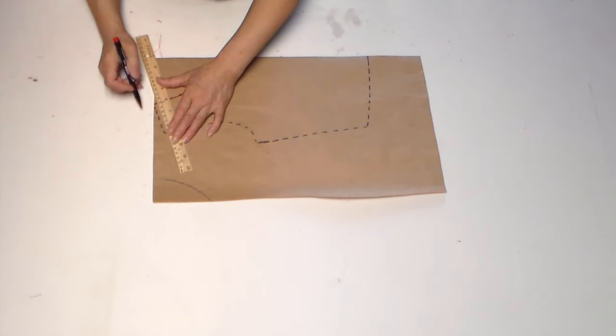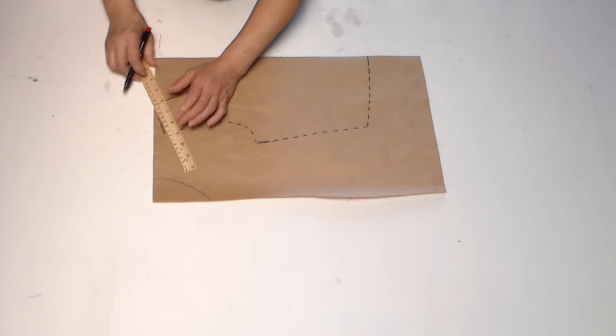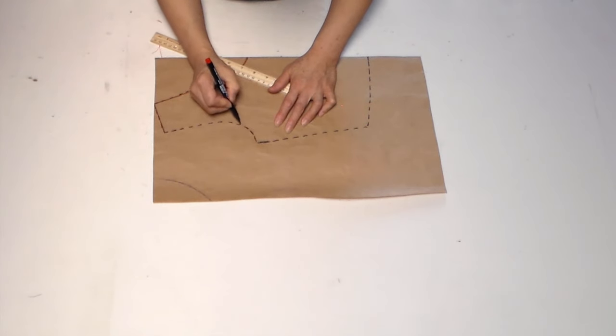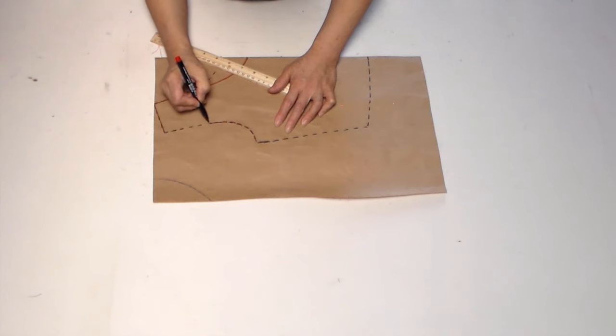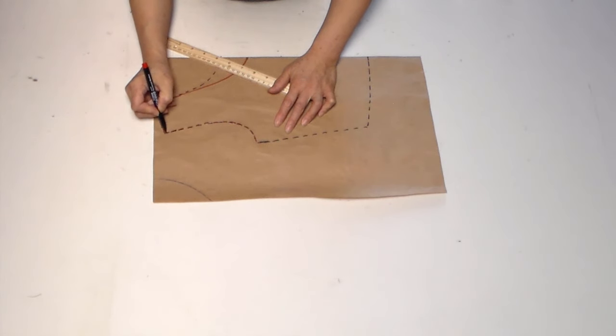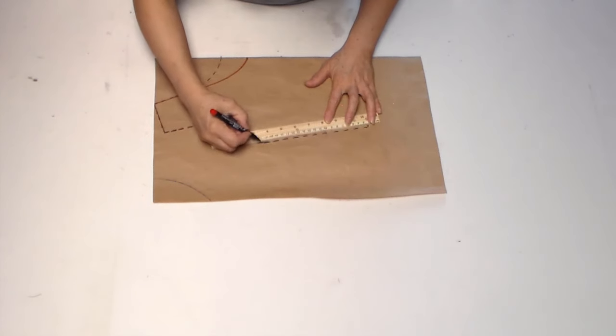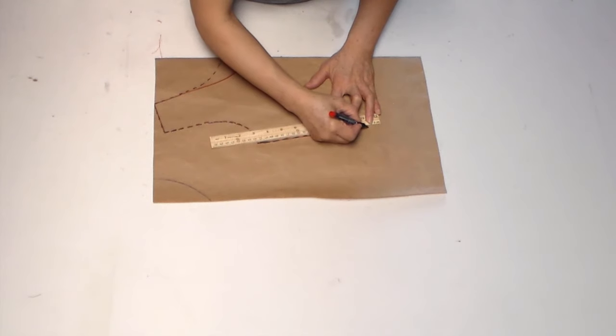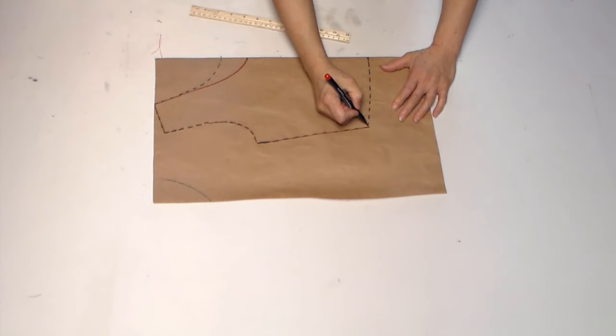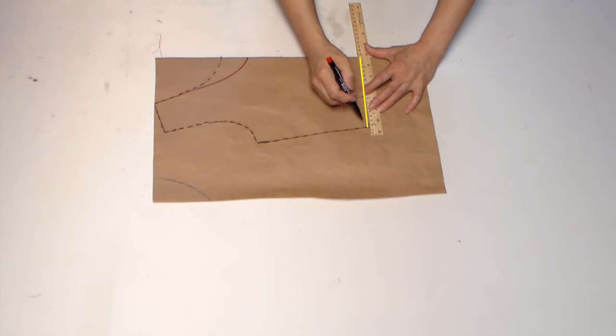So now, we make the cutting line clear. Because this is a back pattern, we don't need the curved bottom. We need to draw a straight line.